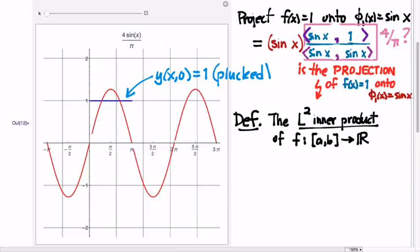For now, we're going to call the interval from a to b. So here the vector space in play is the space of all functions whose domain is the closed interval from a to b and whose codomain is the set of real numbers. And the definition of this inner product is the following.